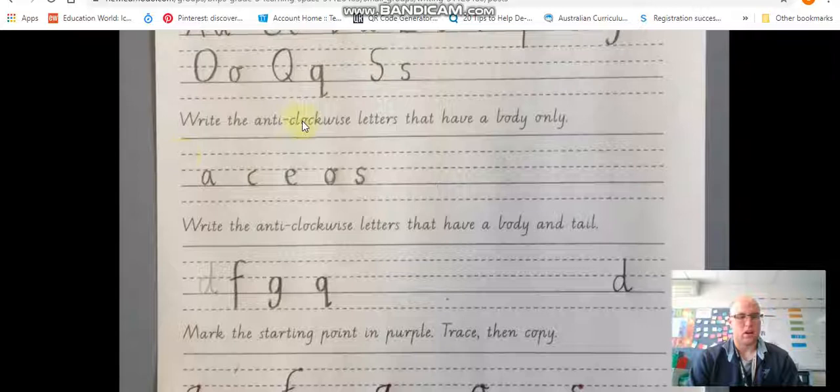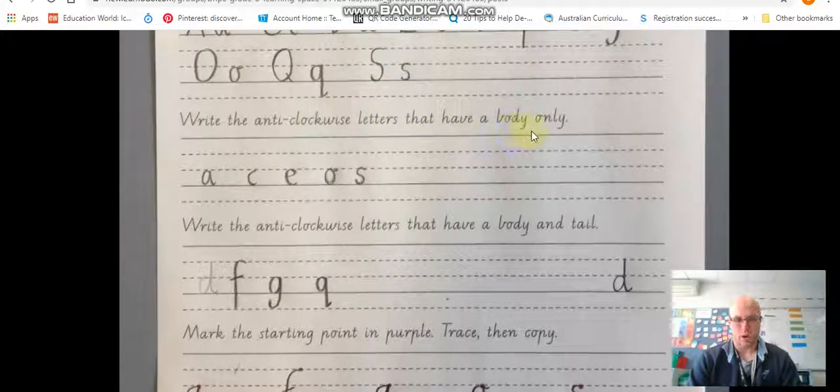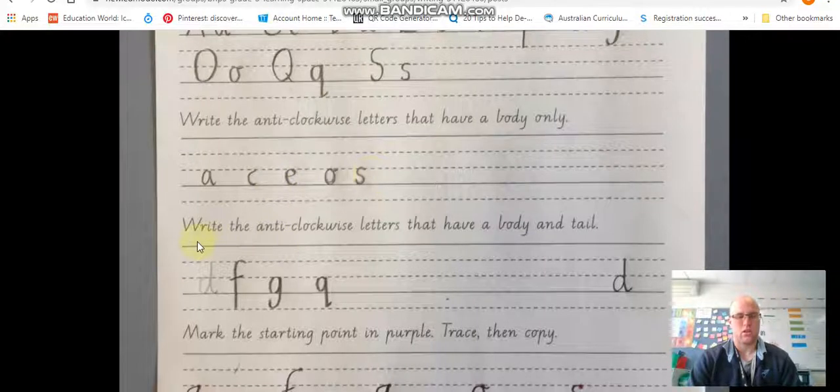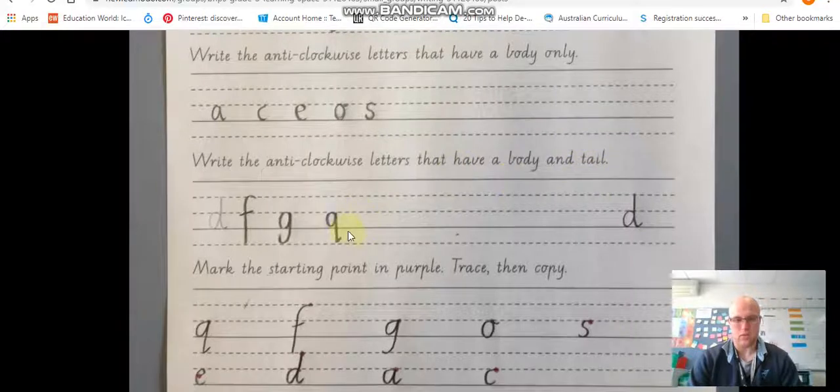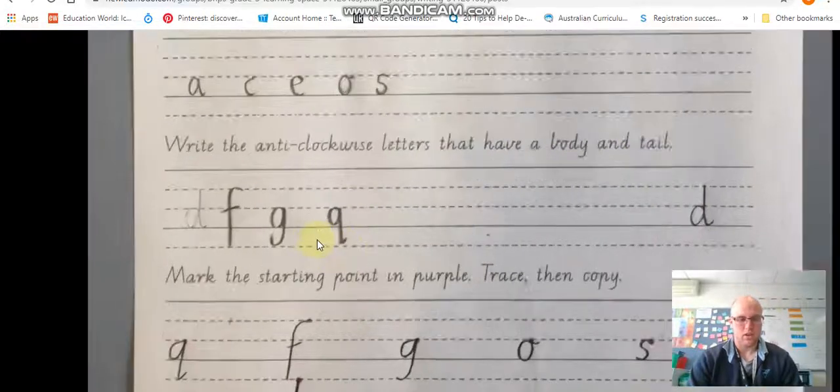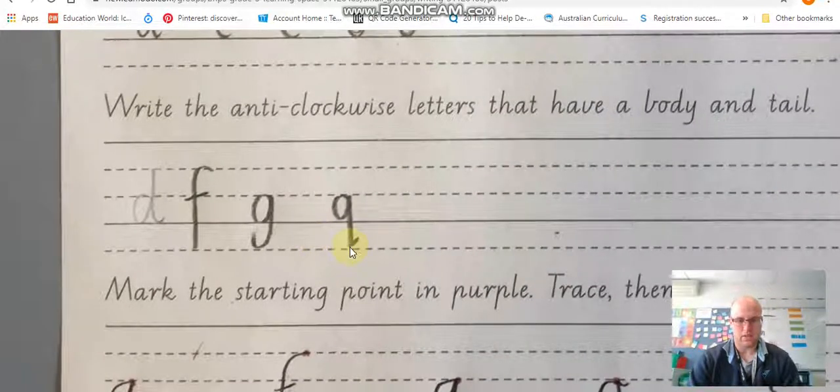Okay so you need to practice writing the capital and the lowercase version. Next activity is you're going to write the anti-clockwise letters that have body only. A C E O and S. Then next write the anti-clockwise letters that have a body and a tail. So tail is when it goes down.